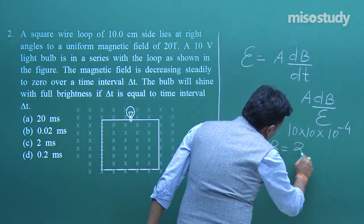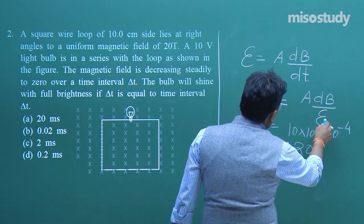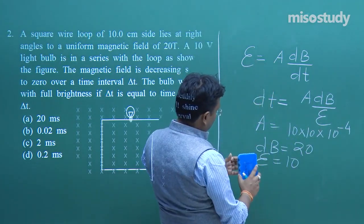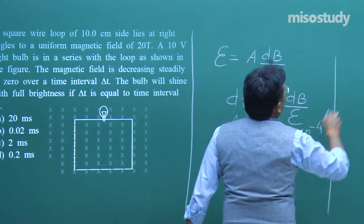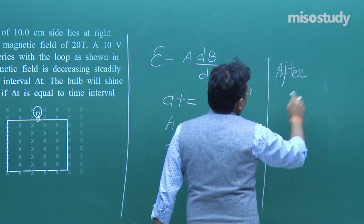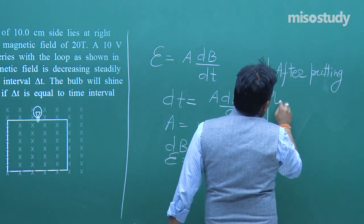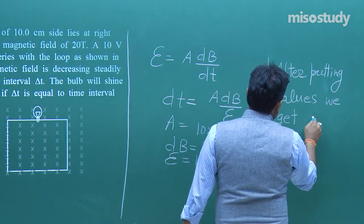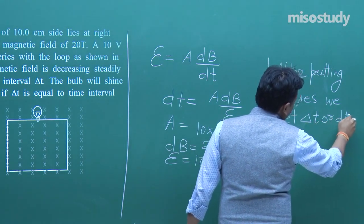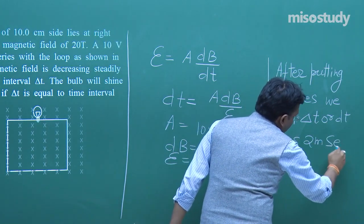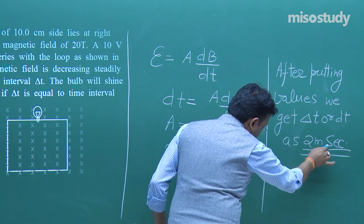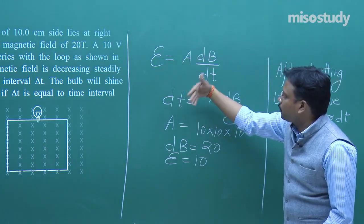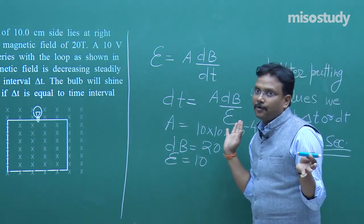After putting in the values, we get Δt = 2 milliseconds. This problem is essentially based on the same result used in question 1, plus basic calculation. The result is 2 ms.